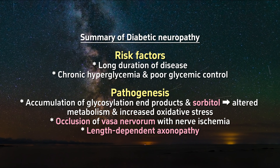Summary of diabetic neuropathy. Risk factors include long duration of disease and chronic hyperglycemia with poor glycemic control. Pathogenesis involves accumulation of glycosylation end products and sorbitol, leading to altered metabolism and increased oxidative stress, occlusion of vasa nervorum with nerve ischemia, and length-dependent axonopathy.